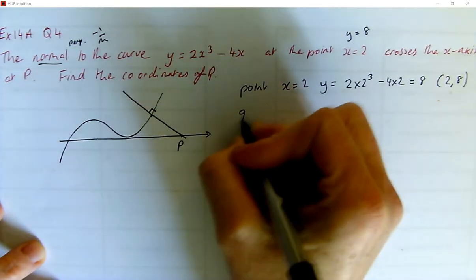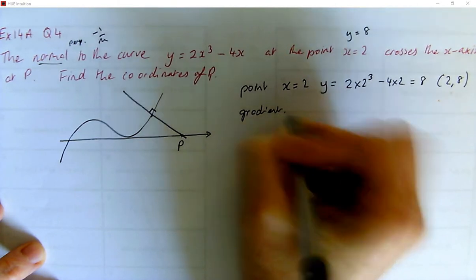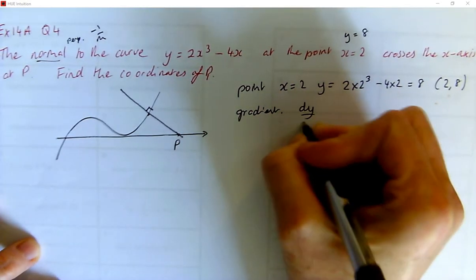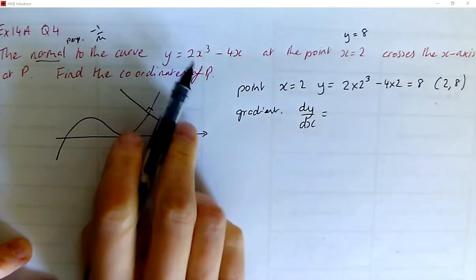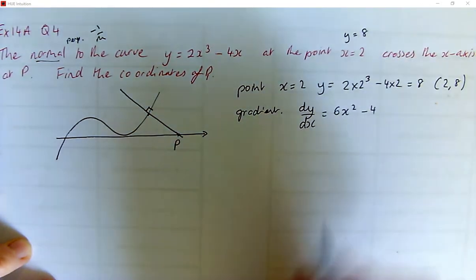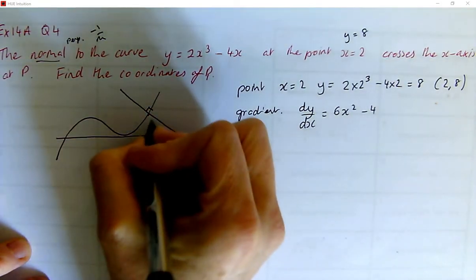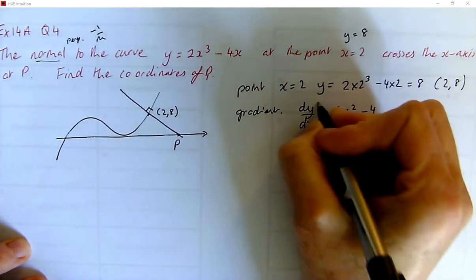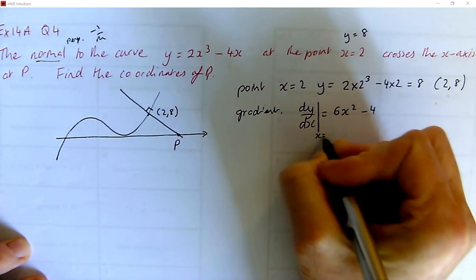Right, and we need a gradient. And to find a gradient of a curve, we differentiate. So we do dy/dx. So that is going to be 6x² minus 4, and we want the gradient at the point where x is 2. So this is (2, 8), isn't it? So the gradient at that point, x equals 2.